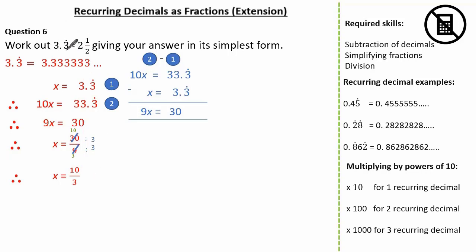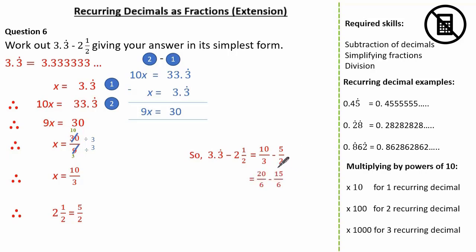So we've converted 3.3 recurring into a fraction. Now let's convert 2.5 into an improper fraction. 2 multiplied by 2, add 1, gives us 5 over our denominator of 2. So we know 3.3 recurring is 10 over 3, and 2.5 is exactly the same as 5 over 2. Using our skills on subtraction of fractions, I'm going to make the denominators both 6. Multiplying the numerator and denominator by 2, we have 20 over 6. Multiplying the numerator and denominator by 3, we have 15 over 6. Therefore, 3.3 recurring take away 2.5 is equal to 20 subtract 15, which is 5, keeping our denominator 6.